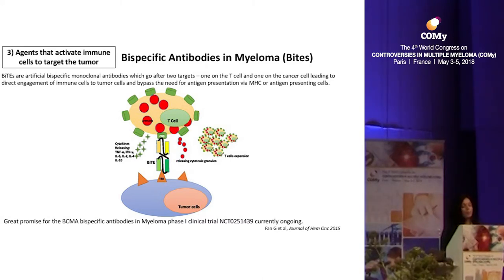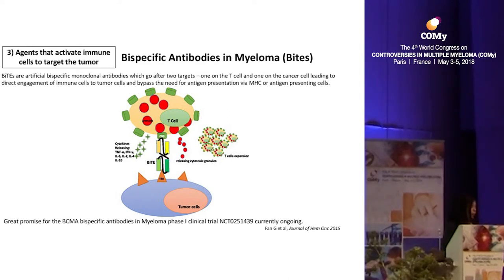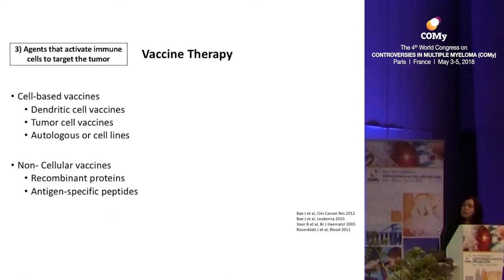There are also other adoptive therapies available in myeloma. Bispecific antibodies — BiTEs — are bispecific antibodies that target one arm on T cells and the other on cancer cells, bypassing the need for antigen presentation via MHC or antigen-presenting cells, directly engaging immune cells. Phase one data of anti-BCMA BiTE are showing signs of response. There are also cell-based vaccines — dendritic cells fused with tumor proteins — and non-cellular vaccines, though these are less relevant compared to other active therapies.